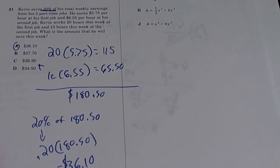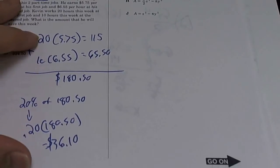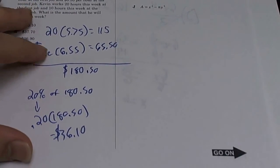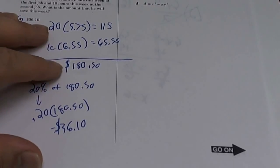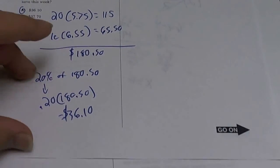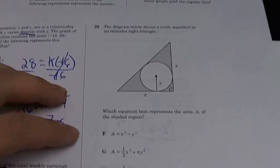So again, first step, we have to find out how much money he earns in the first job, how much money he earns in the second job. Then you add them up to find out how much money he earns in total. Then you find 20% of that. So 20% of this is $36.10.